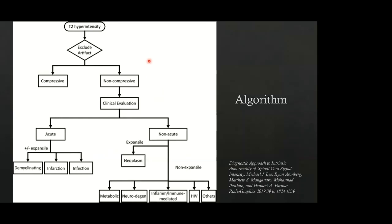This is an algorithmic approach to evaluate for T2 hyperintensity or myelopathy in the cord. First, exclude artifactual causes and compressive causes from discs or osteophytes. In non-compressive causes, after clinical evaluation of whether the patient presented acutely or non-acutely, demyelinating conditions can have either expansile or non-expansile appearance. Acute conditions include infarctions and infections, usually presenting with non-expansile signal abnormality. Non-acute expansile abnormalities are concerning for neoplasia, while non-expansile abnormalities include metabolic, neurodegenerative, and inflammatory immune-mediated causes.